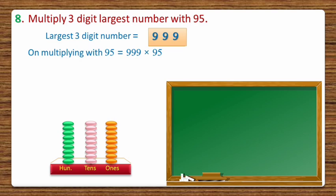Now let's calculate the value. In 95, there are 9 tens and 5 ones — that's 90 plus 5 equals 95.